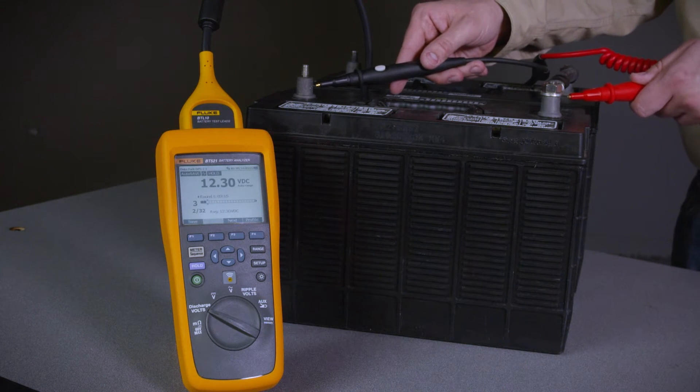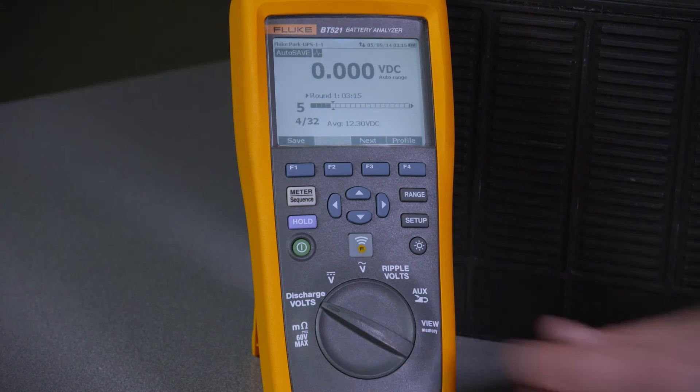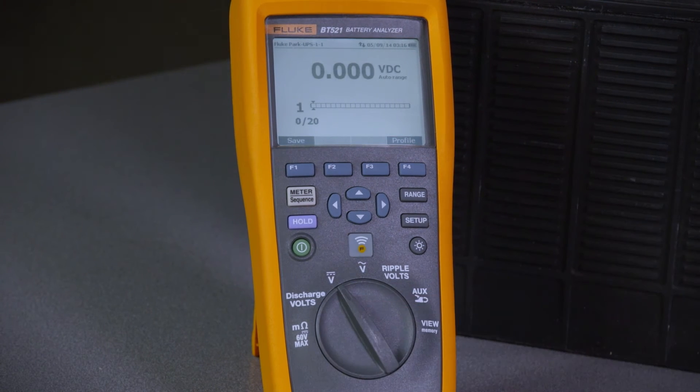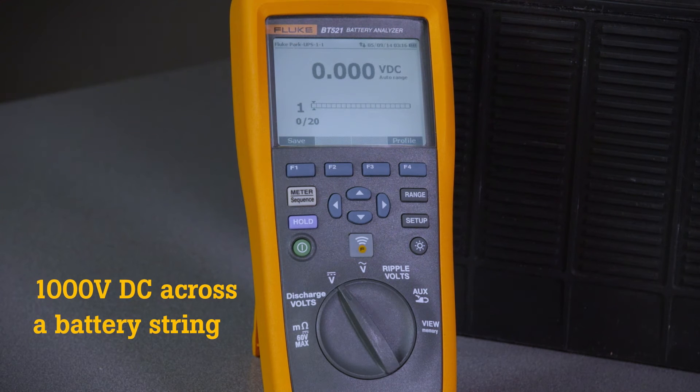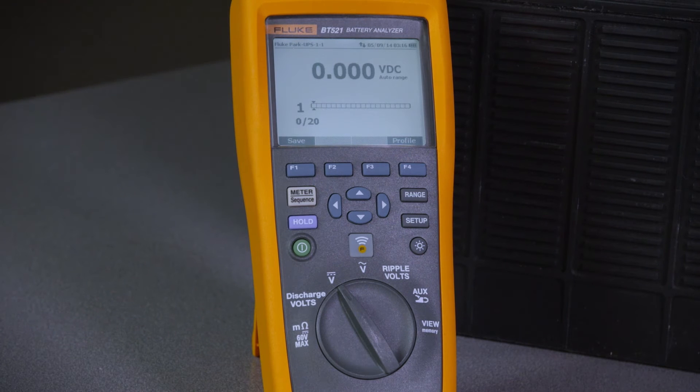Those measurements can be documented automatically with the software. The next mode is simple DMM mode. It's possible to safely measure up to 1000 volts across a battery string or output from a charger or inverter.